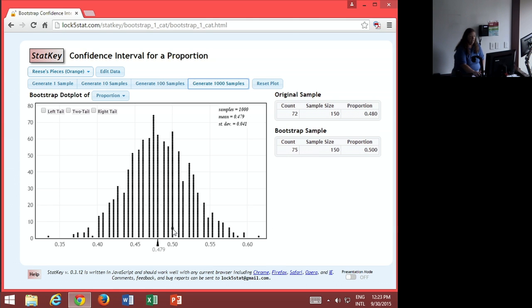Now, if we look at it, this point right here at 0.5 is telling us we had 75 orange out of the 150. Right up here we had 88 orange out of the 150 for 0.587 as the proportion.